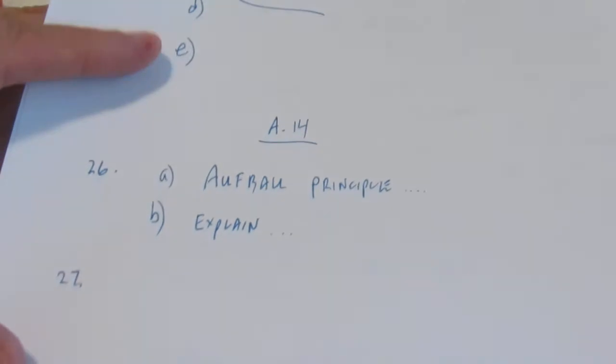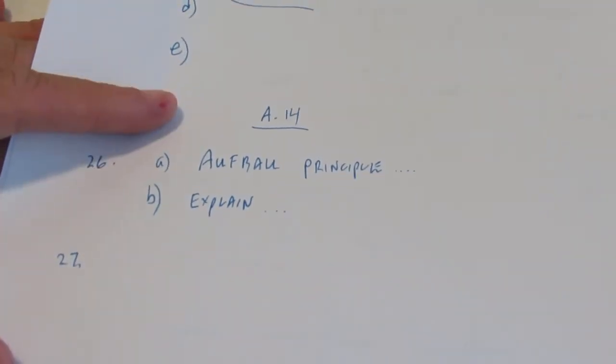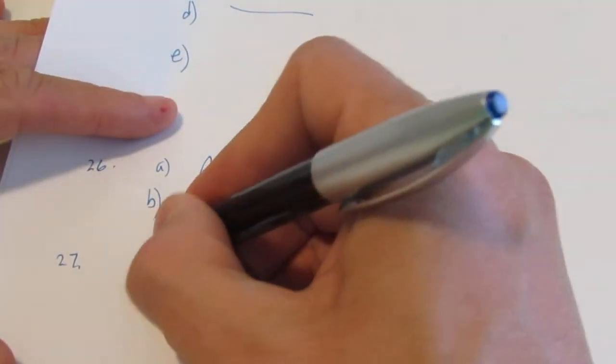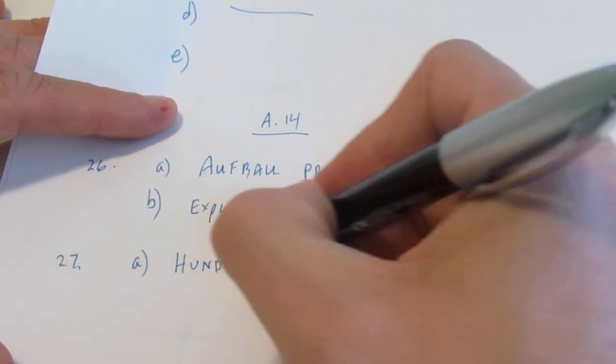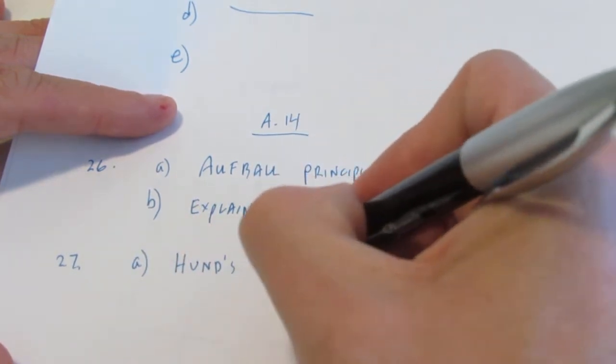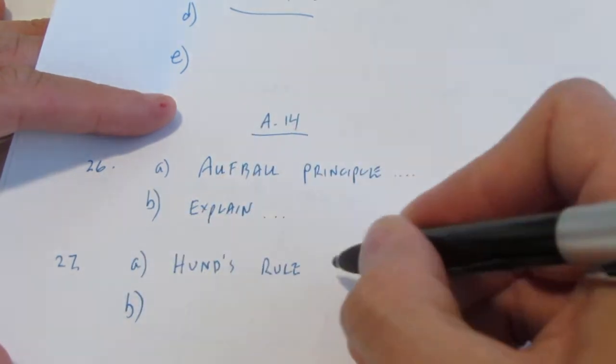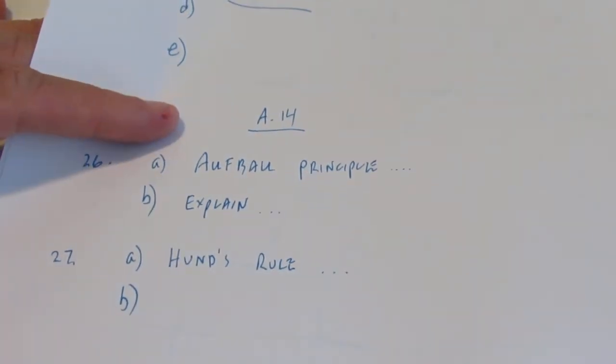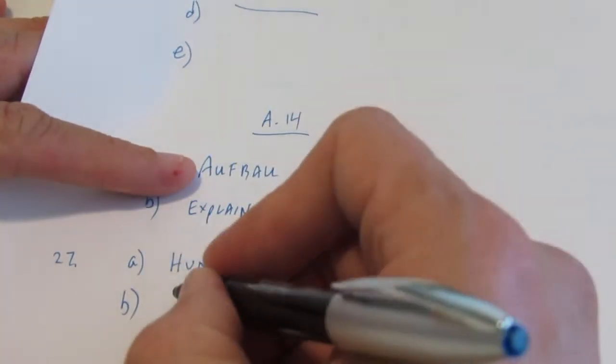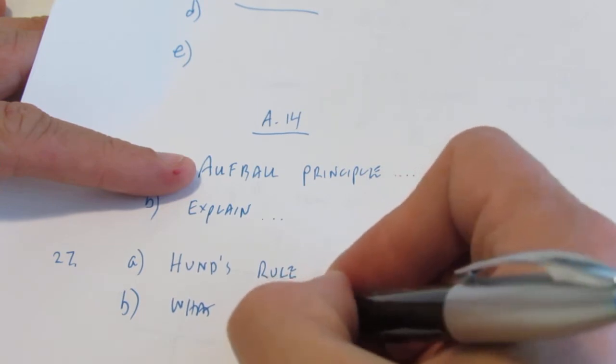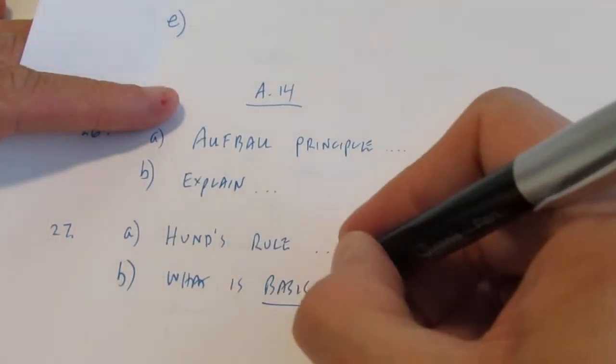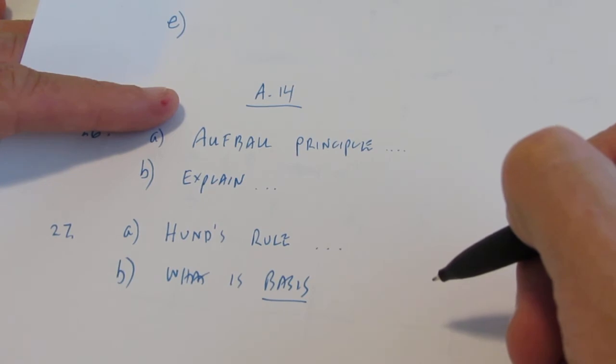Next up is number twenty-seven. Twenty-seven wants you to explain, or define, Hund's Rule. That's a great rule. I want you to take the time and look that up on your own. And letter B says, what is the basis for this rule? So first of all look it up, and think about what the basis for that rule is, whatever that means.